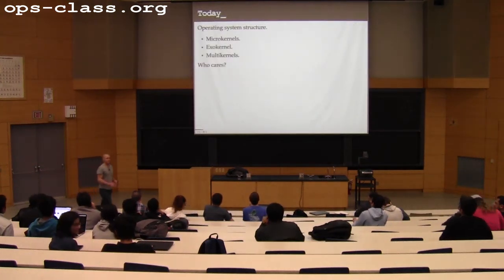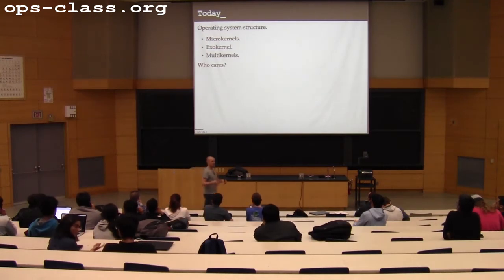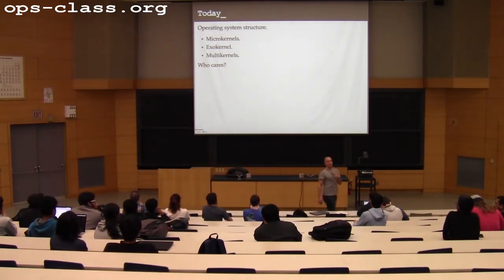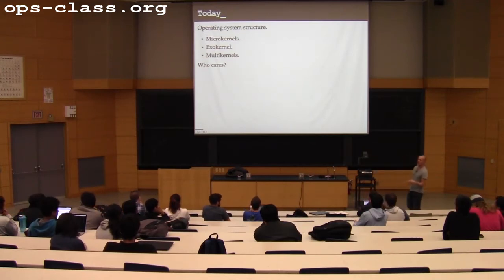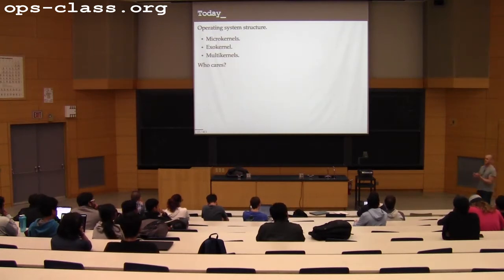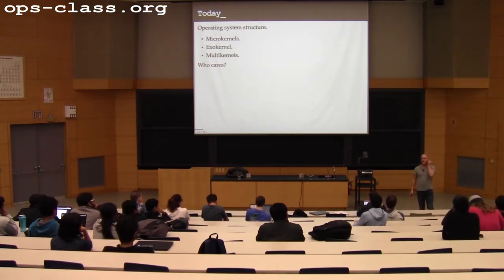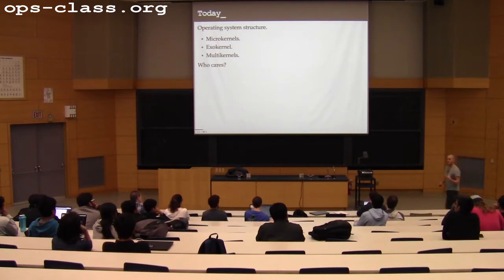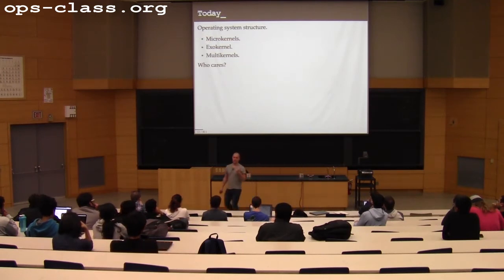Today we're going to shift gears — we're done talking about file systems. This begins the potpourri part of the course. Today and Wednesday we'll talk about operating system structure, how we organize all the code and features the OS provides. On Wednesday, you'll read a paper about exokernels, an early 90s effort to reorganize operating systems that highlights the OS's two responsibilities: multiplexing and providing abstractions.